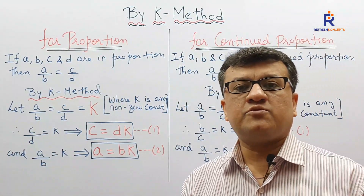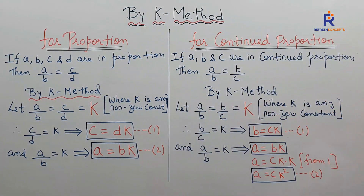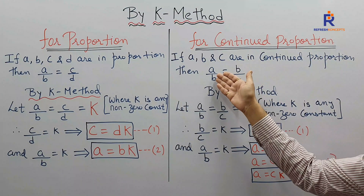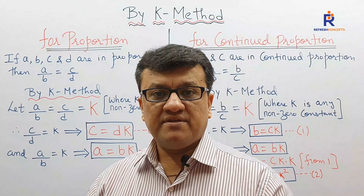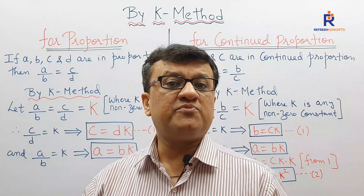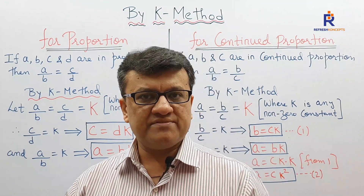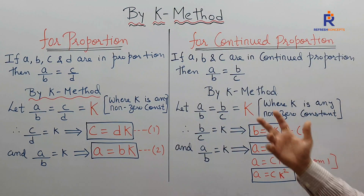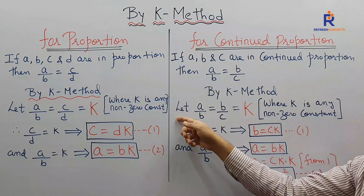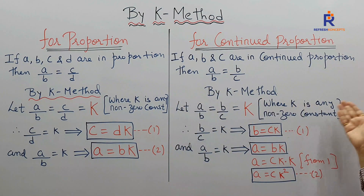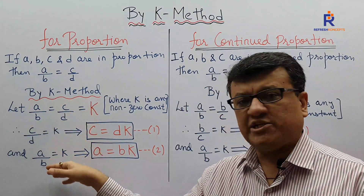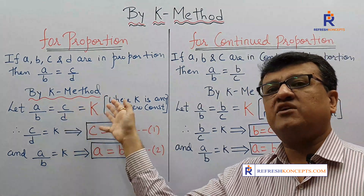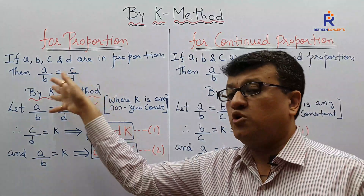We will see many sums to understand how K method works for proof sums. Now for continued proportion: if A, B, and C are in continued proportion, then A by B equals B by C. To prove it by the first method, prove B² equals AC. Today by K method, on the same lines, let A by B equal B by C equal K, where K is any non-zero constant. Always pick up the extreme right first — here, take B by C first.